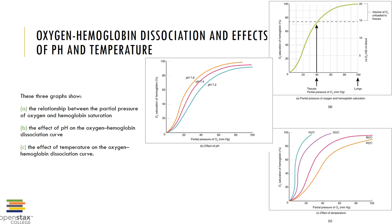The relationship between pH and hemoglobin saturation is known as the Bohr effect. Temperature also affects transport: as temperature increases, the percent of hemoglobin saturation decreases.